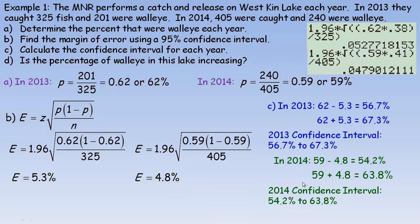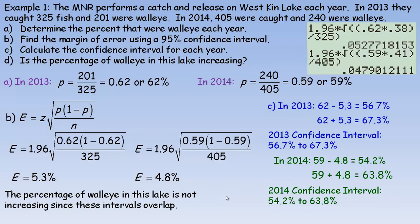A common question to ask is: is the percentage of walleye in this lake increasing or changing? As long as these confidence intervals overlap at all, then there's no evidence that it's actually changing. The intervals 56.7% to 67.3% and 54.2% to 63.8% do overlap — there's an overlap between 56.7% and 63.8% which is several percentage points. So the fact that the intervals overlap means we cannot say the percentage of walleye is increasing.